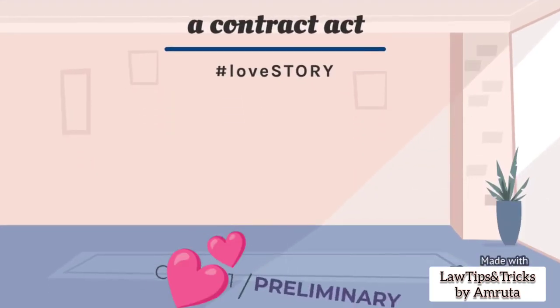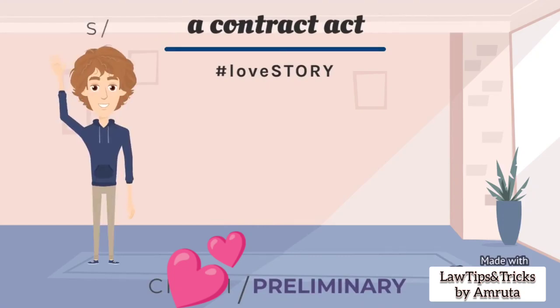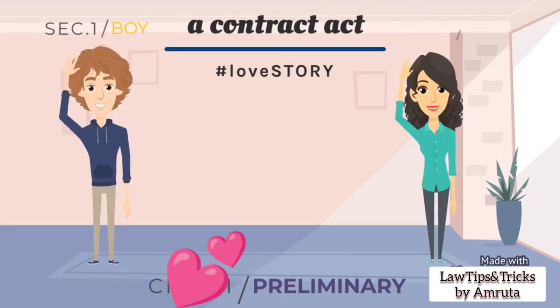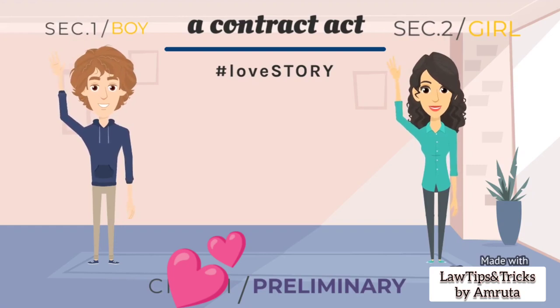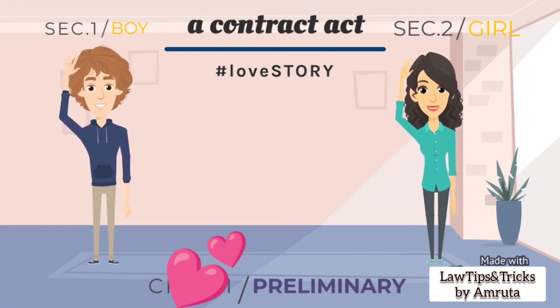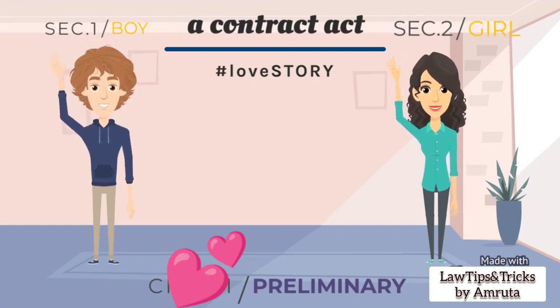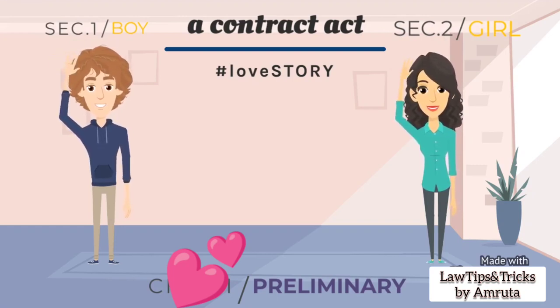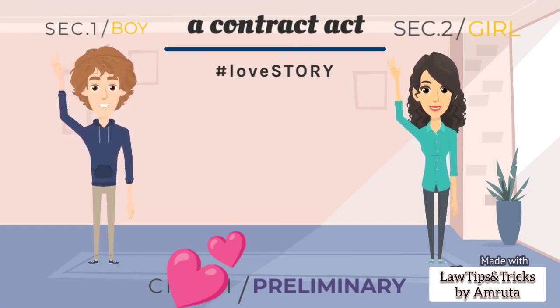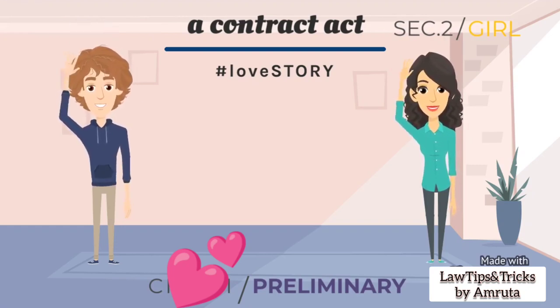First, the preliminary part. In a love story, what is important? A boy and a girl, right? Like that, in a contract, two parties are very important. So here we have section 1 and section 2 — this is the preliminary part.